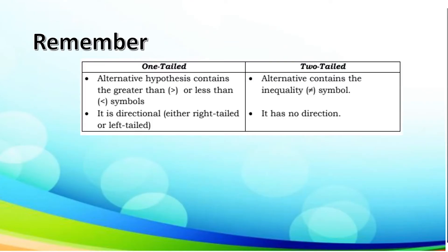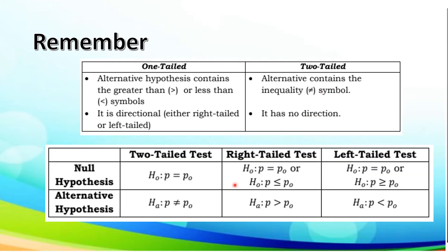Remember the one-tailed test and two-tailed test. The alternative hypothesis contains 'greater than' or 'less than' — it is directional. If the alternative contains the 'not equal to' symbol, it has no direction. To illustrate the null hypothesis and the alternative hypothesis in the two-tailed test, right-tailed test, and left-tailed test, please remember this given table.